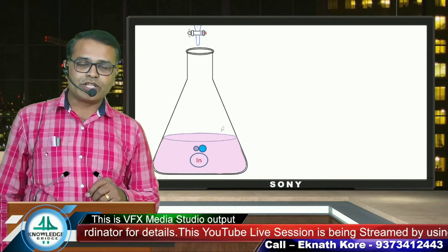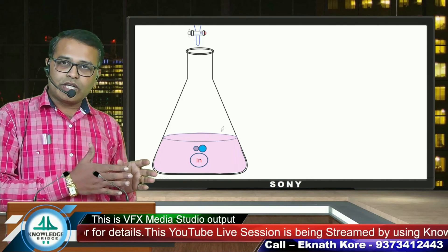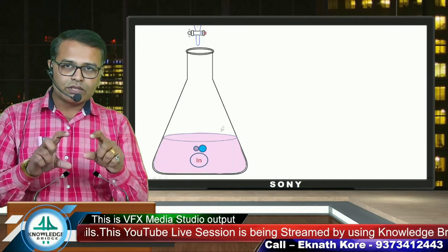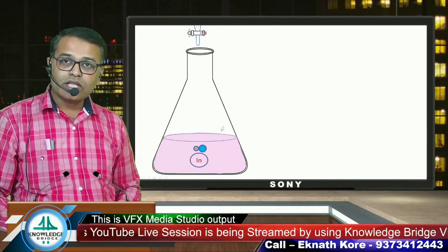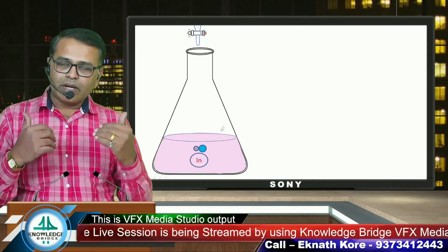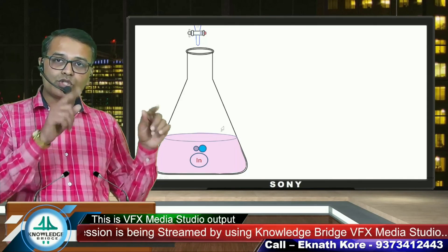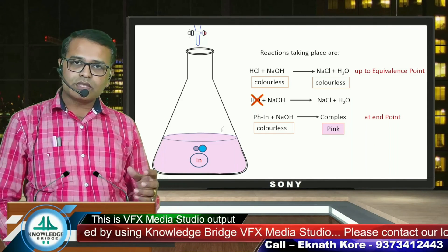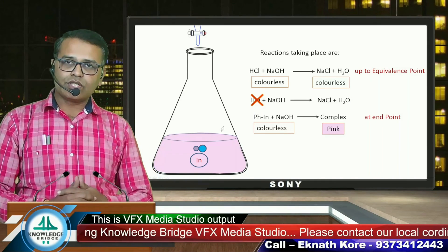This is the main difference between equivalence point and end point. The end point is where the color change is observed, and just one drop before — the actual reaction completion point — that is the equivalence point. The equivalence point is not possible to determine by traditional titration. By using instrumental methods, we can identify the equivalence point.